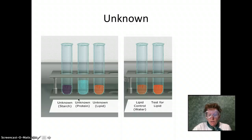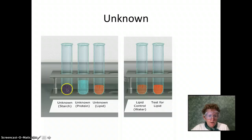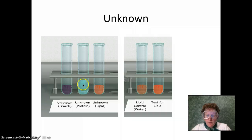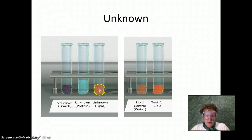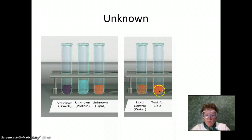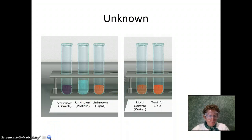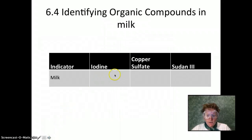Here's what it looks like in the virtual lab. The unknown with iodine turned purple just like ours. The unknown with copper sulfate just turned blue. And the unknown with Sudan 3 stayed pretty much the same color as the water. I've put up the water and vegetable oil for color reference. So that's what it looks like in the virtual lab, and now let's work on the next part.